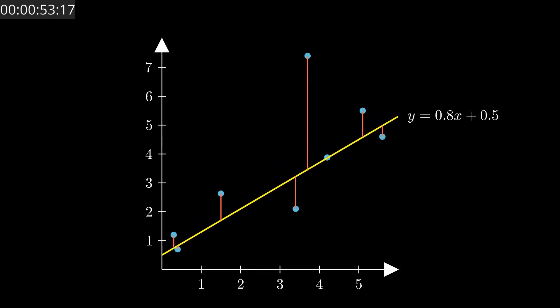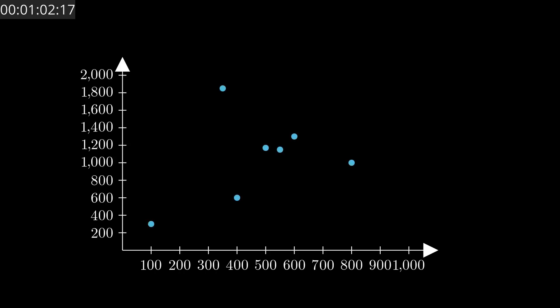But why fit a line in the first place? Because in machine learning, we use this line to predict unseen future data. It's one of the simplest predictive models we can build, and it works surprisingly well. It's as easy as just entering $2000 advertising budget as an input, and our model will give the estimated sales corresponding to the money spent.